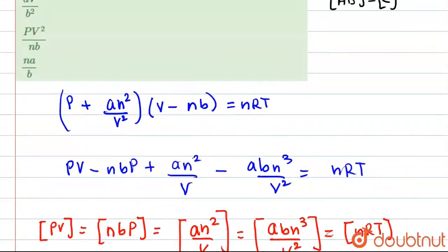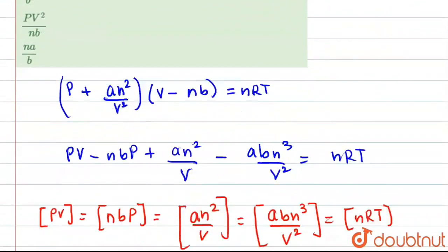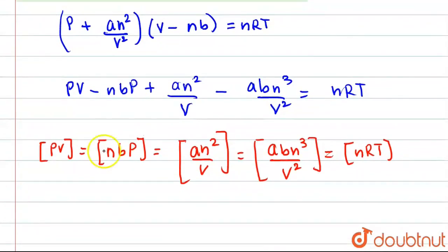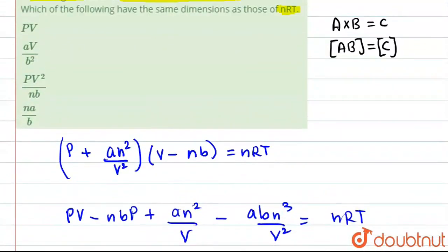So our answer will clearly be PV, because among the given options, PV has the same dimensions as NRT. This is our answer. Thank you.